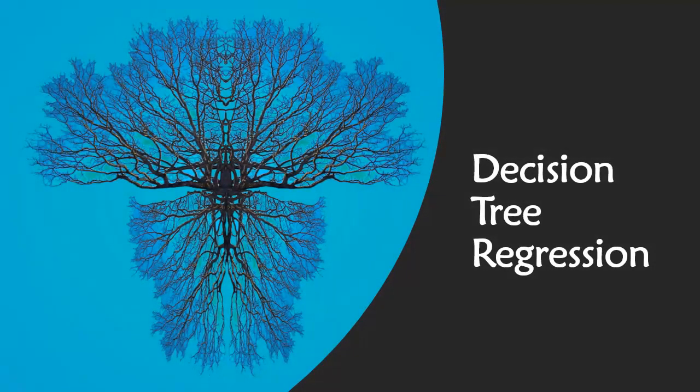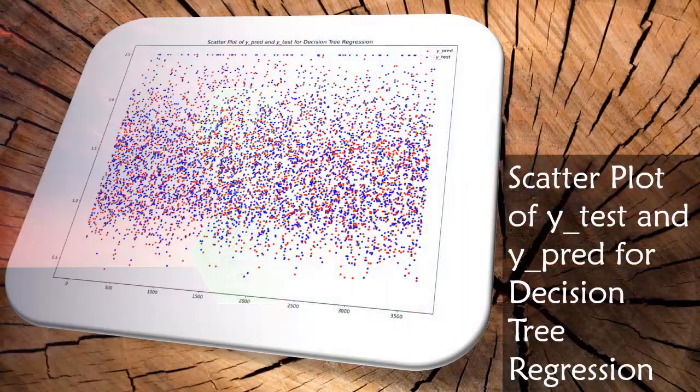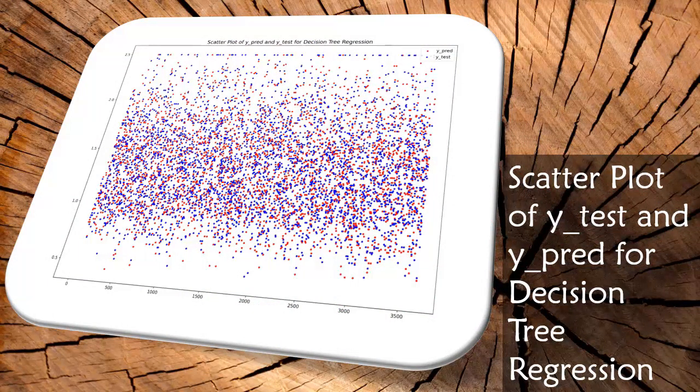Coming to our second model that is the decision tree regression. Coming to the summary of the decision tree regression. Here we have obtained an R² of 0.8419 which is an improvement than the multiple linear regression. So we can say that the decision tree regression has a good fit to our data. The figure shows the scatter plot of y_test and y_predicted for decision tree regression.